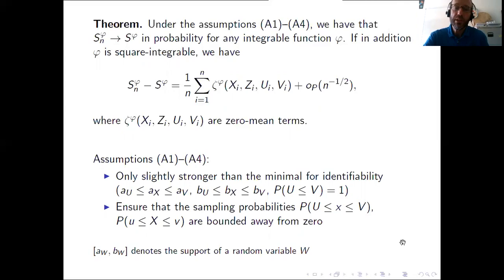And what about the needed assumptions? Well they are quite technical but basically what I want to say here is that the assumptions are only slightly stronger than the minimal for identifiability of the involved distributions and yes we need a slightly stronger version of that because of the technical proofs we use and these assumptions ensure for example that the sampling probabilities, the theoretical sampling probabilities for X values and for couples U, V of truncation limits, are bounded away from zero and this is needed in proofs because we need to deal with some risky denominators.